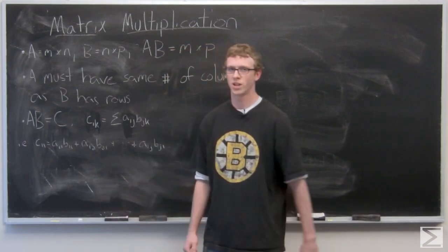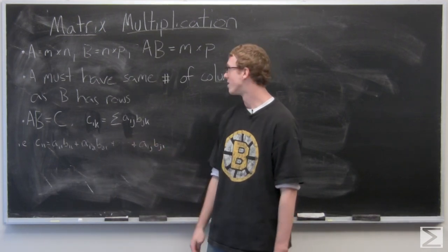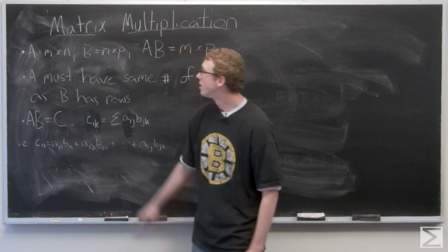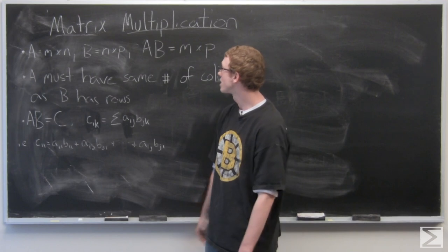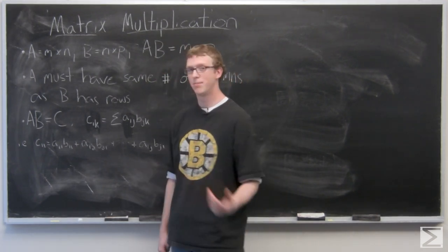So matrix multiplication has to be done with matrices that the first matrix must have the same number of rows as the second matrix does columns. So if we have A as an M by N matrix and B as an N by P matrix, AB is going to result in an M by P matrix.